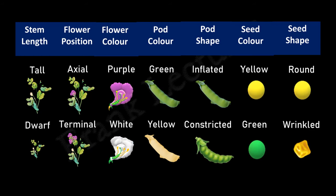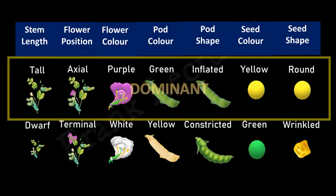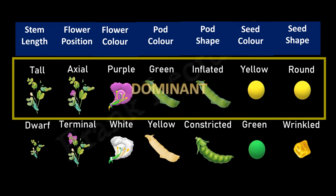Mendel determined the dominant and recessive trait in each of the seven pea characters. Tall stem length, axial flower position, purple flower color, green pod color, inflated pod shape, yellow seed color, and round seed shape are all the dominant traits. The other trait of each character is the recessive one.